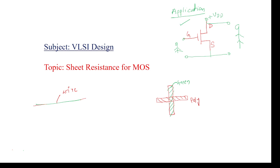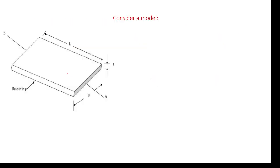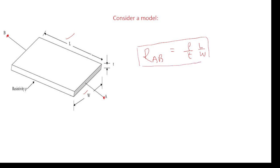For the given transistor, what is the internal resistance? Even though the transistor is having internal capacitance, there is also sheet resistance. If you consider this sheet — the transistor sheet — this is the length for the sheet and this is the width. Here A is the area and T is the thickness. The sheet resistance RAB from point A to point B is equal to: RAB = (ρ / T) × (L / W), where ρ is resistivity and T is the thickness of the oxide.